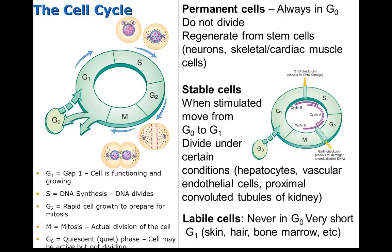We're going to go back to the cell cycle for just a minute. We have the G0 phase, which is where the cell is out of the cycle — it's not going to be dividing, and it's usually functioning and growing but won't divide. Then we have the G1 phase where the cell is functioning and growing, and then the S phase where we're synthesizing the DNA.